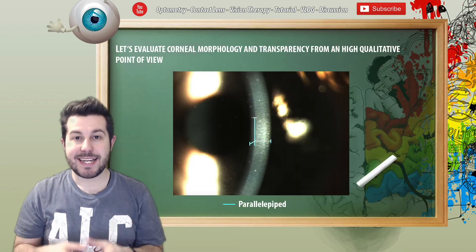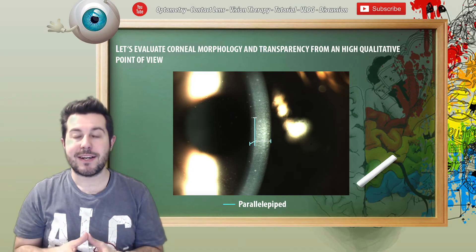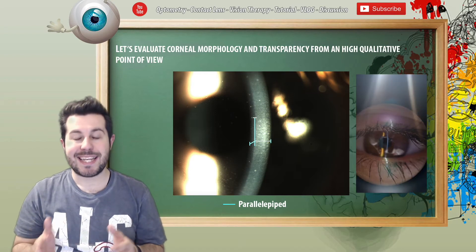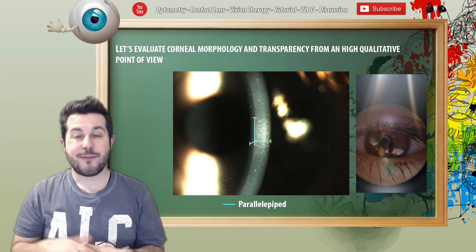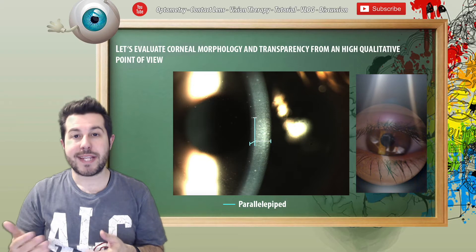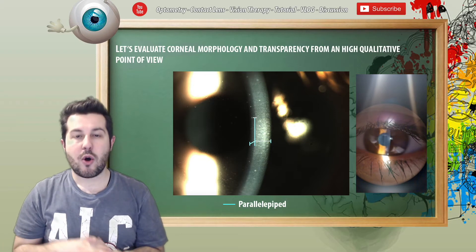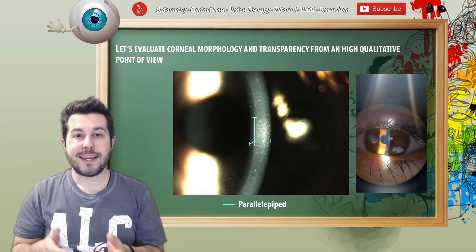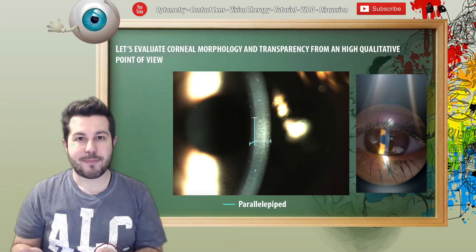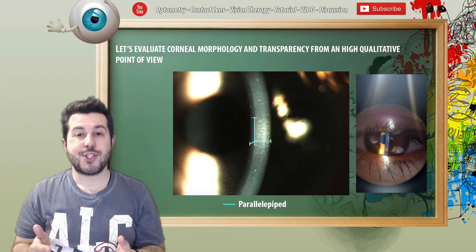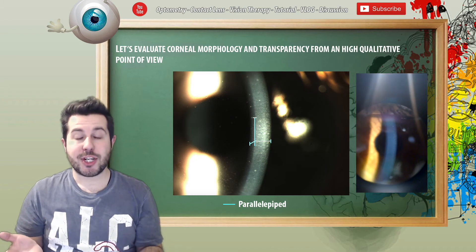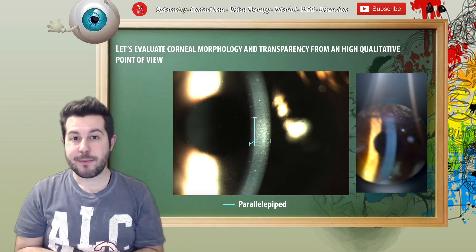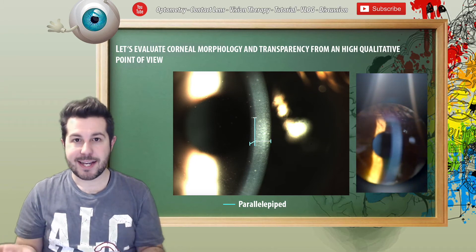The parallelepiped technique is used to evaluate irregularity in corneal surface — for example, corneal damage, protein or lipid deposits, surgical complications, Fleischer ring, and others.